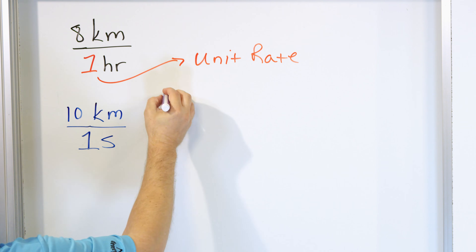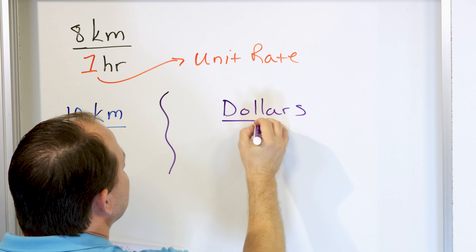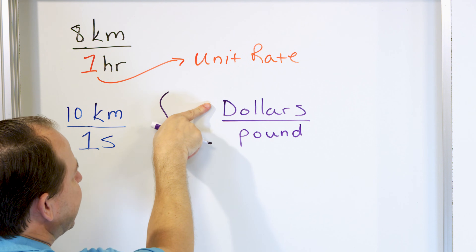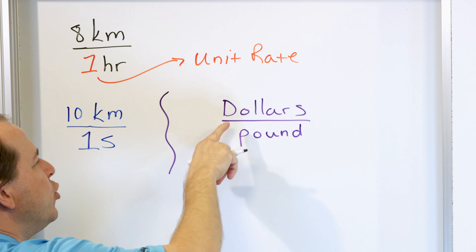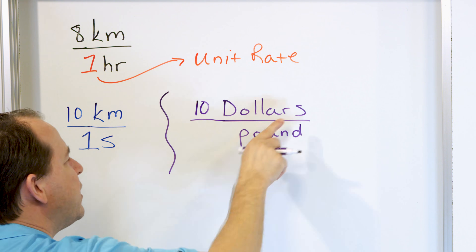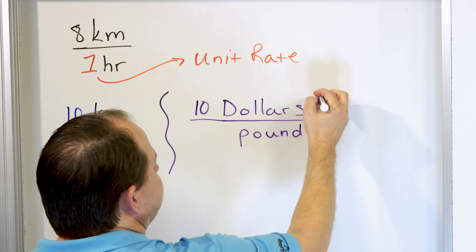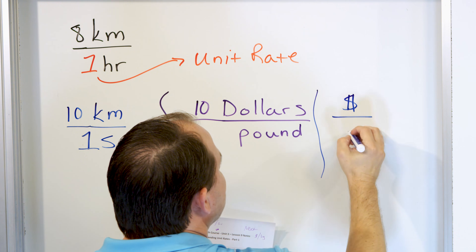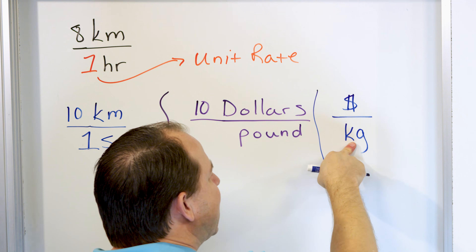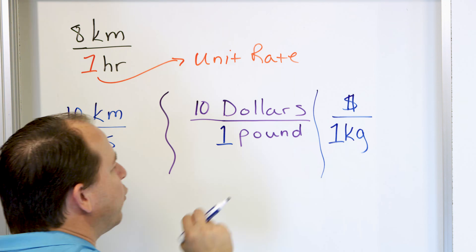Instead of velocity, let's talk about something in the grocery store. How about dollars per pound? Pound is a unit of weight in the U.S. or U.K. system — it's however many dollars something costs per one pound. If it were $10 per pound, it would mean $10 for every one pound of beans or rice. It could also be dollars per kilogram — $3 per kilogram or $6 per kilogram. Every kilogram you measure out, that's how many dollars it costs. There's an invisible one down here, so this is a unit rate.